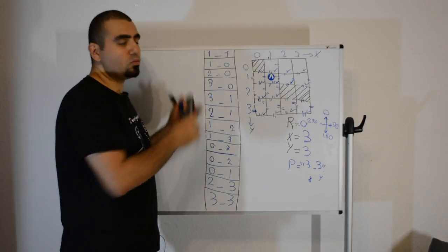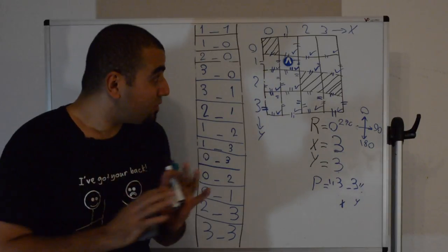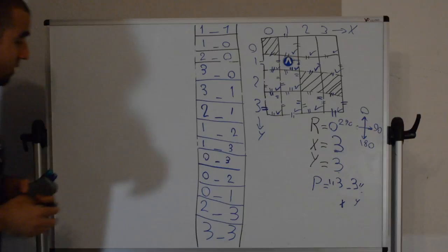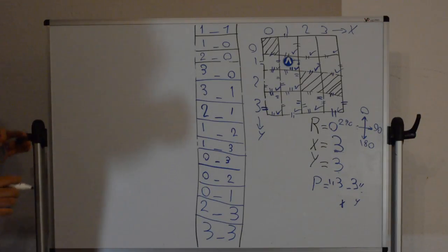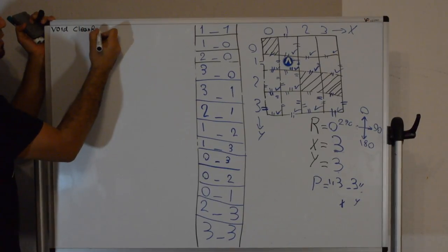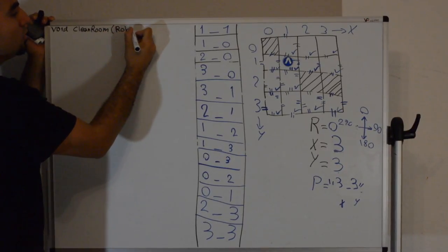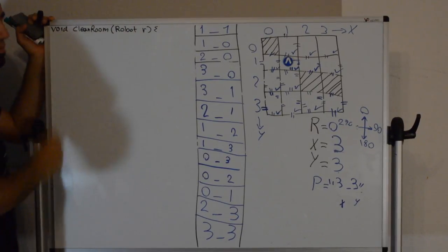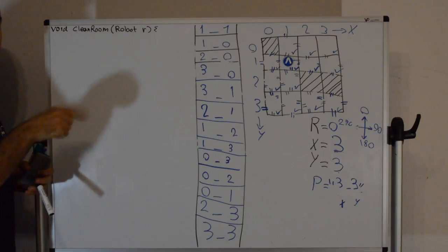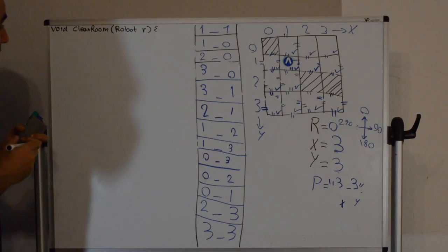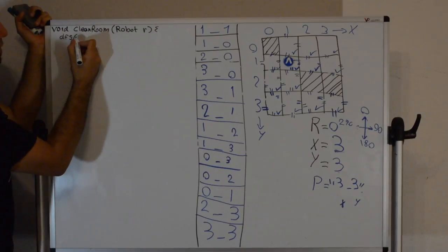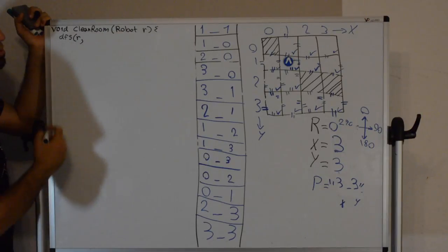Now let's write the code. The solution calls one method: 'void cleanRoom(Robot r)'. This method calls depth-first search which will keep cleaning until it exits. We create the DFS method and send the robot, starting at x=0 and y=0. Starting at 0,0 means we might use negative values, but that's fine as long as we can concatenate unique strings.